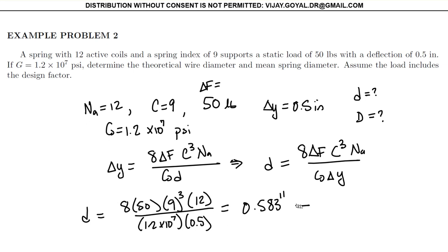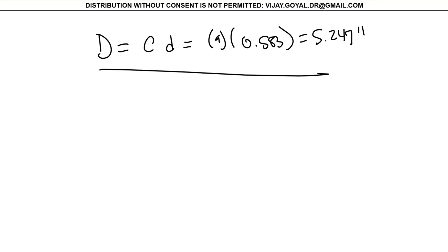To find your mean diameter, your mean diameter is C times d, 0.583, that gives you 9 multiplied by 0.583, and that gives you 5.247 inches.